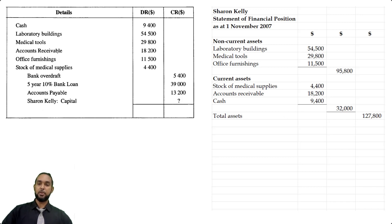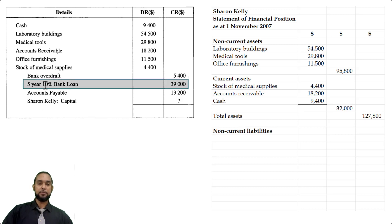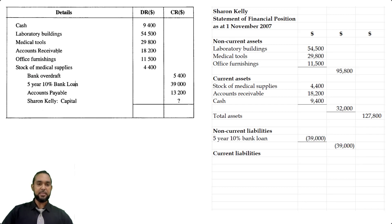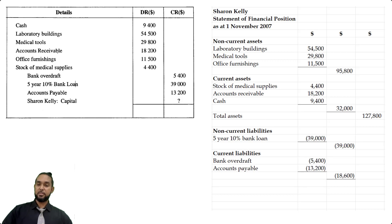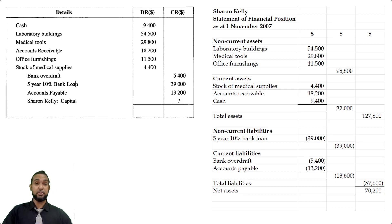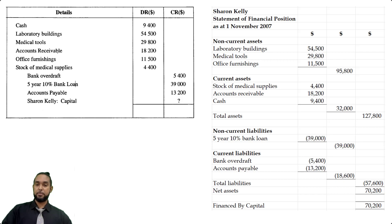We're going to add that subtotal to the non-current assets subtotal to get total assets. Now let's deal with the liabilities, starting with non-current liabilities. We have one: a five-year 10% bank loan — five years means it's non-current. Then current liabilities: bank overdraft of 5,400 and accounts payable of 13,002. Get a subtotal and add that to 39,000, giving us 57,600. When we subtract that from 127,800, we get net assets — the same figure we found in part A. So we simply put 'financed by capital' and put the same figure from part A right there.